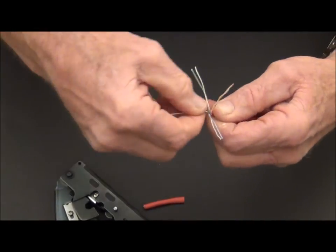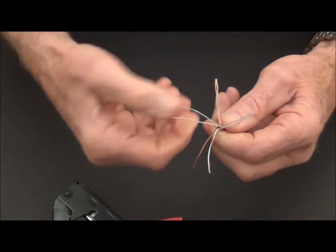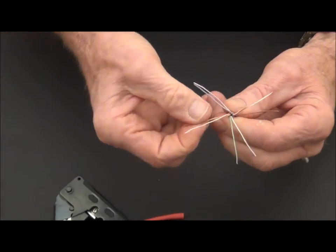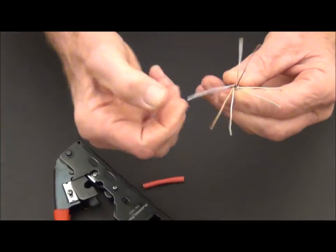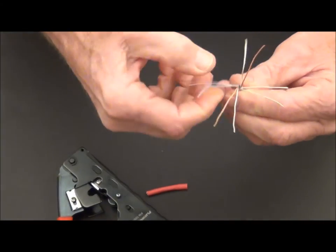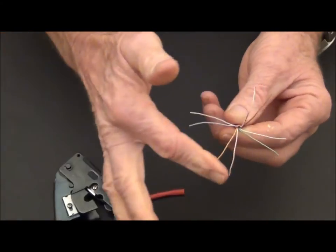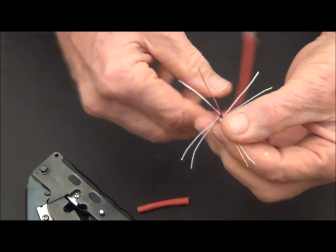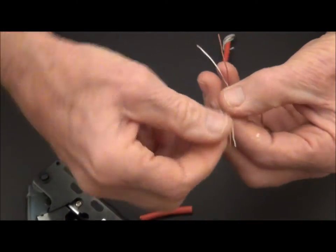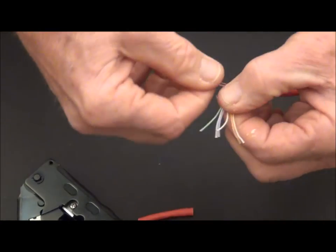And then as I straighten them out, I know that brown-white's always going to be first, green-white's going to be first, orange-white's first, and blue's first. So we're going to do the B today. You've got the A or the B, so you're ready to roll. So the B is orange-white, orange, green-white, blue, blue-white, green, brown-white, brown.